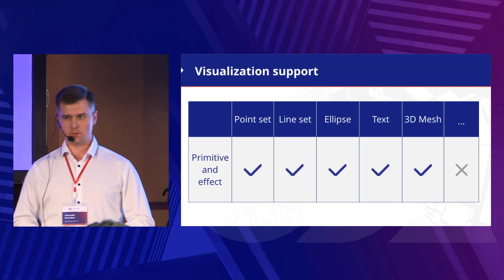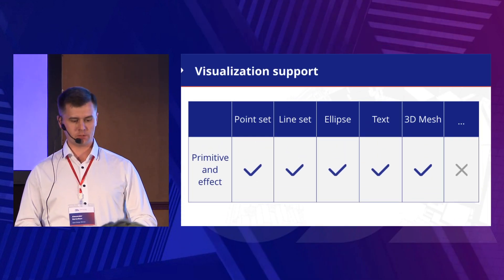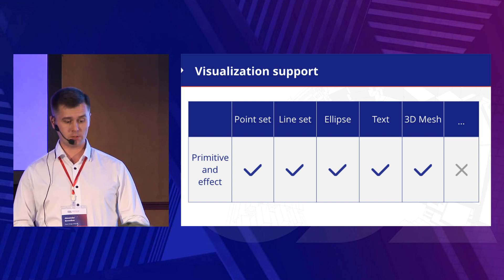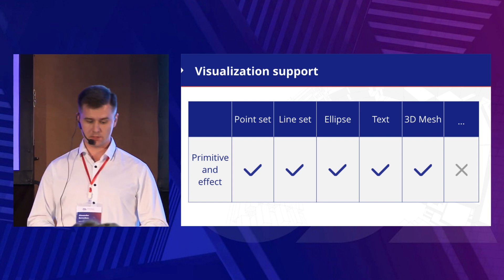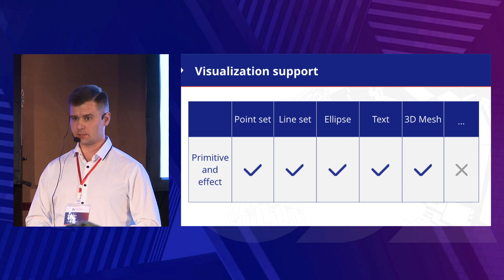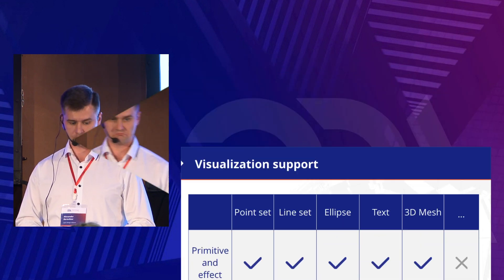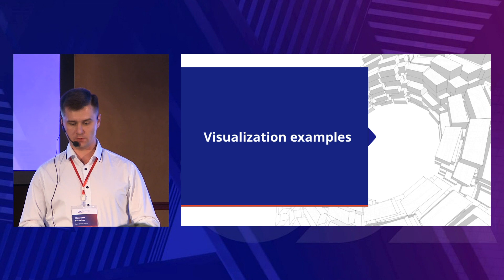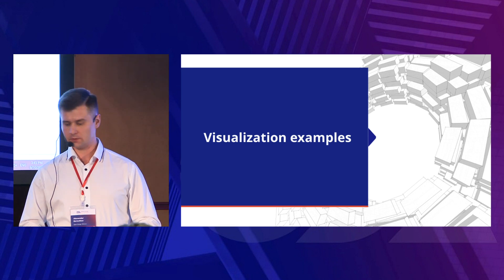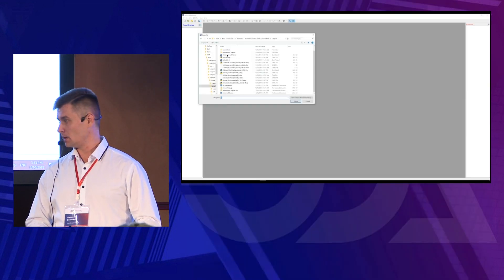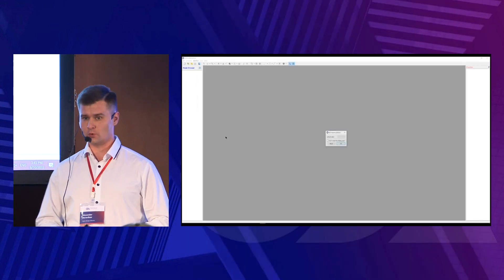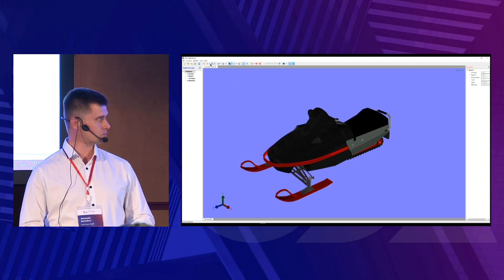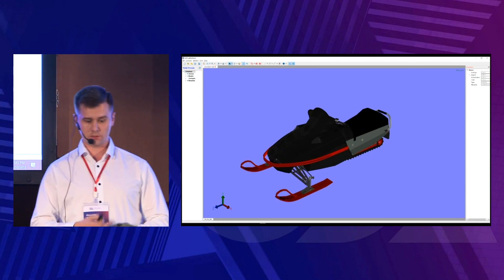As for the visualization support, we are able to support point sets, line sets, ellipses, texts, and 3D meshes. Now, we are able to switch to visualization examples, and for instance, to open a Snowmobile model in our software.